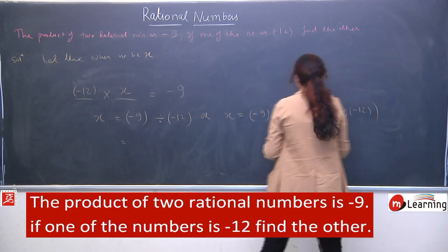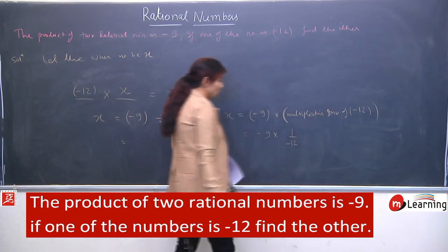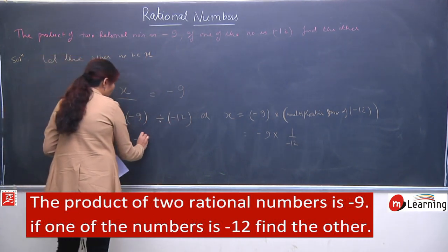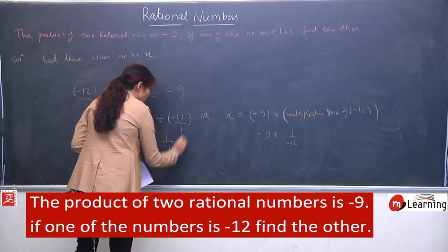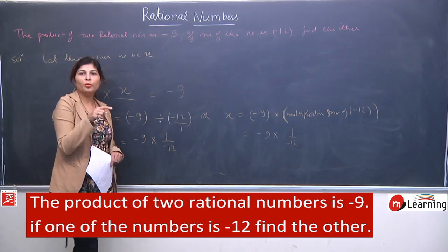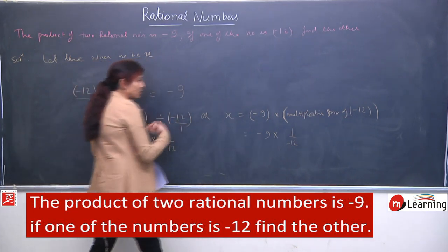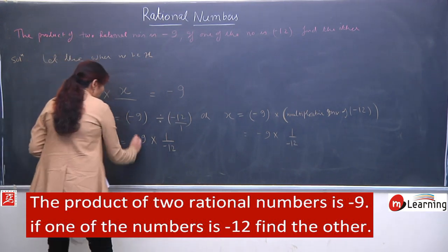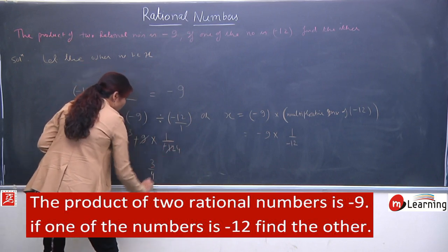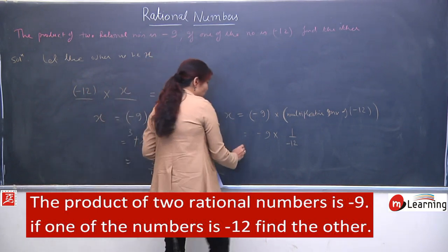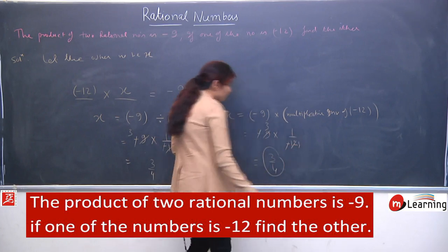Either you can write: x equal to minus 9, and multiplicative inverse of minus 12. Aap jab yeh likhenge, dono tariqe se solve karna bata raha hoon. Minus 9 multiply — iska multiplicative inverse kya ho jayega? Similarly, jo mein ne yahan likha aapko, divide ko aap multiplication mein convert karte hain, toh jo bhi term hai woh reciprocate ho jati hai — denominator goes to numerator and numerator goes to denominator when we convert divide into multiplication. Minus minus will cancel, and 3 ka 9, 4 ka 12 — so is method ke through bhi answer wahi aaya. Method mein ek step ka change hai, bas aur kuch nahi. Finally dono se answer: 3 by 4.